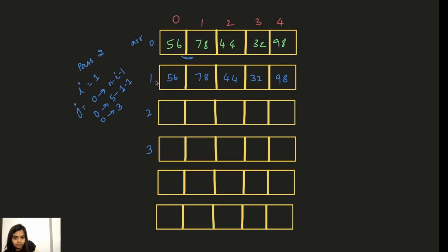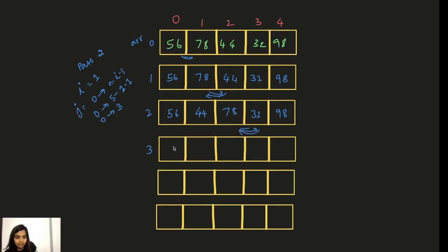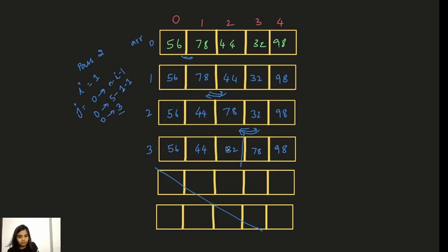We compare indices zero and one: is 56 greater than 78? No, so we don't swap. Next, j becomes 1 — we compare indices one and two: is 78 greater than 44? Yes, so we swap — 44 comes here and 78 goes there. Now j increments to 2: is 78 greater than 32? Yes, so we swap again — 32 comes here and 78 goes there. We only go up to index 3, so we skip the last two already-sorted elements.